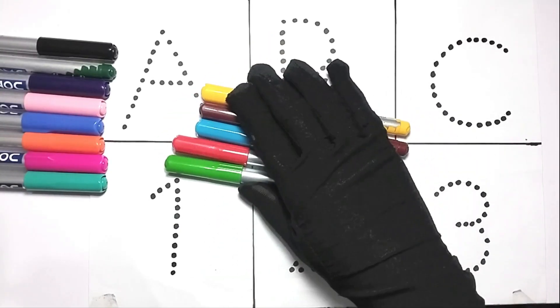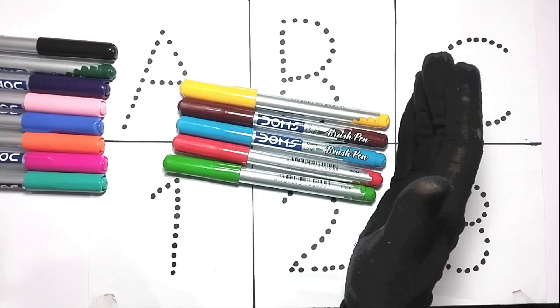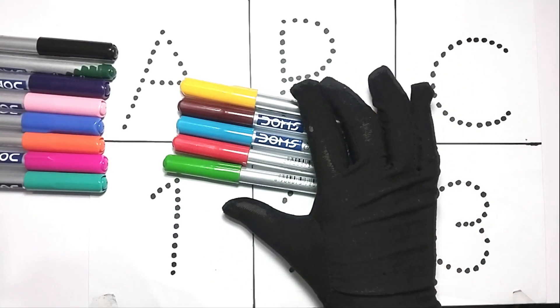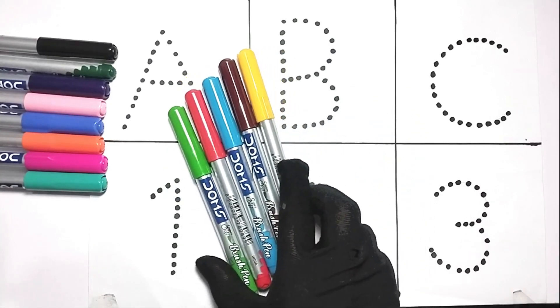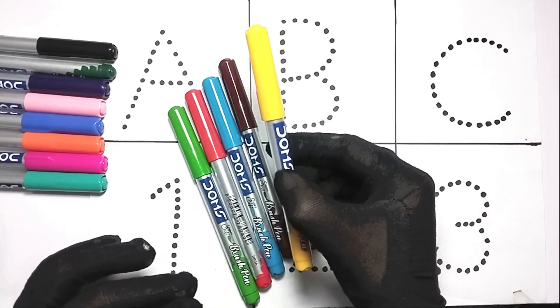Hello kids, welcome to my another video. Today we will learn A for Ant, B for Boy. These are our colors.